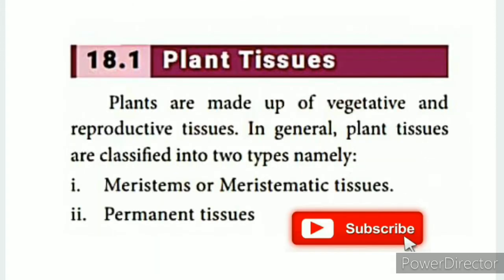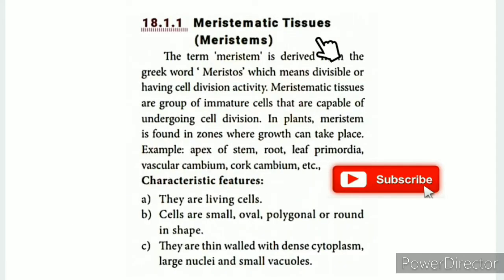Plant tissues include vegetative and reproductive tissues. The two main types are meristematic and permanent tissues. The word 'meristematic' comes from the Greek word 'meristos', meaning divisible — that is, capable of repeated division.